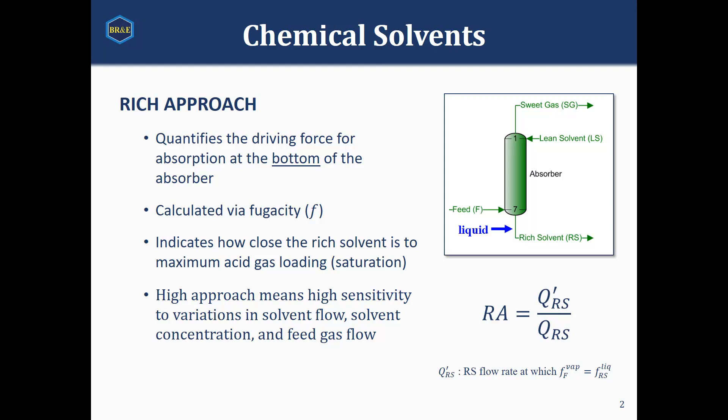A very high approach means our system will be very sensitive to any variations, so you can think of it as if we have a variation where our amine flow has gone down, we no longer have the capacity to pick up as much H2S, and any H2S that comes into our system will have to go straight out into our sweet gas, leaving us off spec. So we want to be keeping this approach again below 80%.